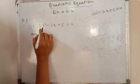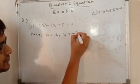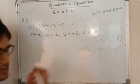Here a equals to the coefficient of x², which is 2. b equals to -3, and c equals to 5.